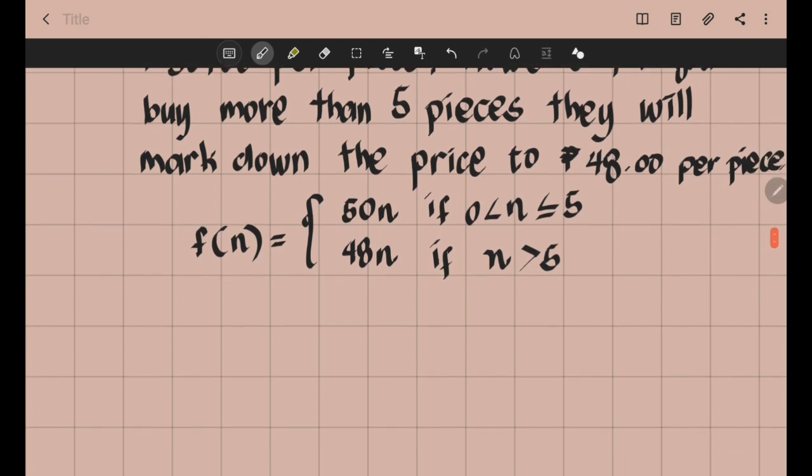Let's have an example for this one. If you were going to buy 2 pieces of chocolate bar, what formula will you use? Is it formula 1 or formula 2? You look at our conditions. Will f of 2 fit in formula 1 or formula 2? It is formula 1 because 2 is between 0 and 5.